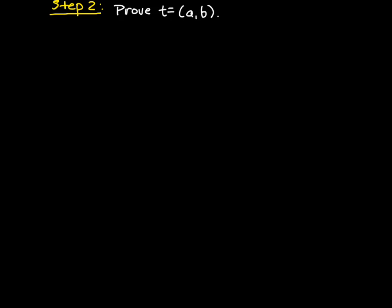That's going to tell us that t is equal to d, and then we will be done. Since the aim is to show that t is the GCD, we have to show it satisfies the two axioms that characterize the definition of greatest common divisor. We first start by showing that t divides a and t divides b. Note first that t equals au plus bv for some integers u and v, just because t is in the set S and so we can write it as a linear combination of a and b.